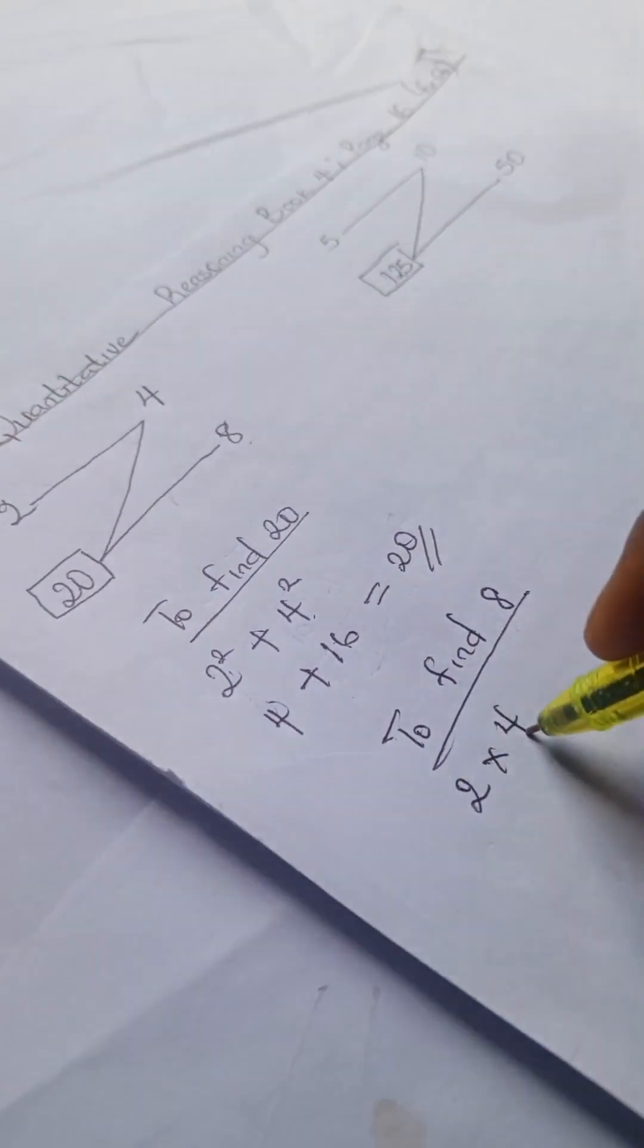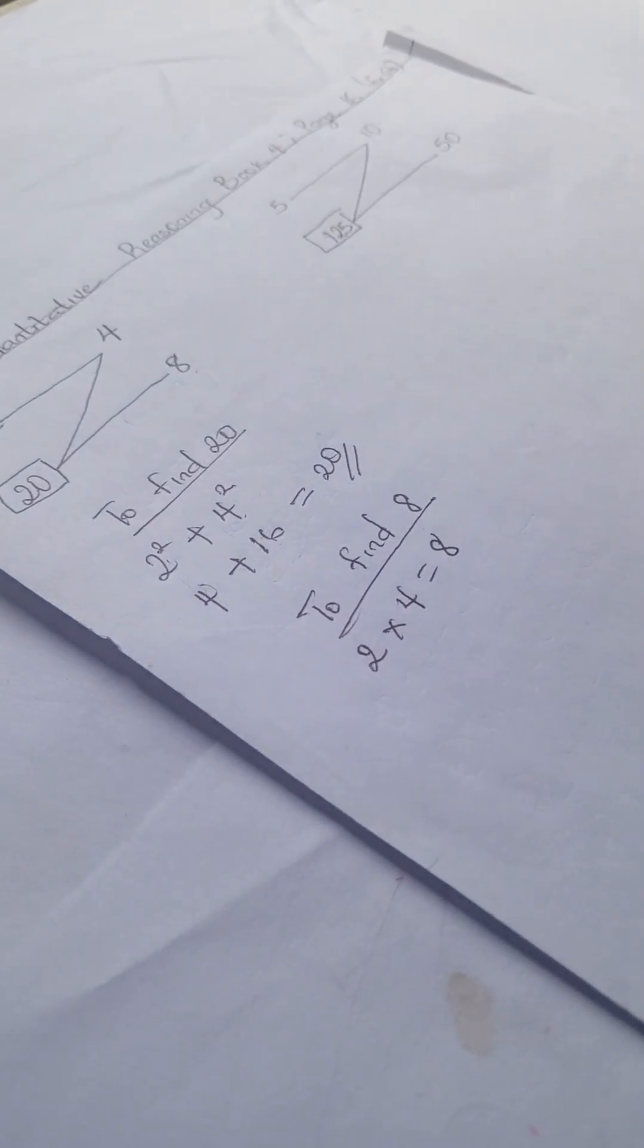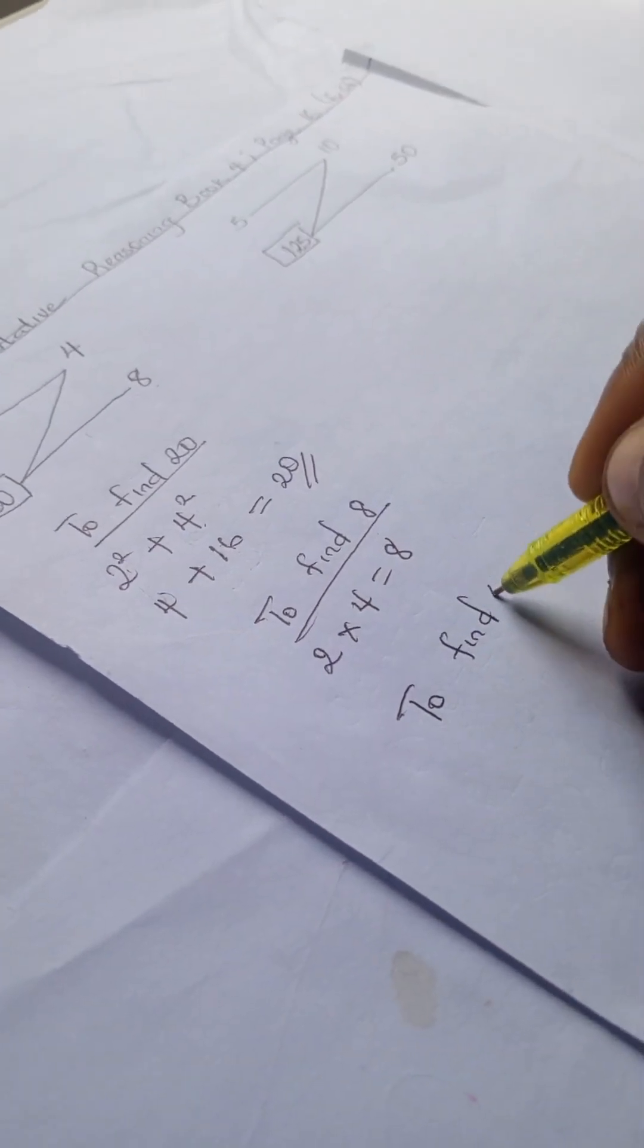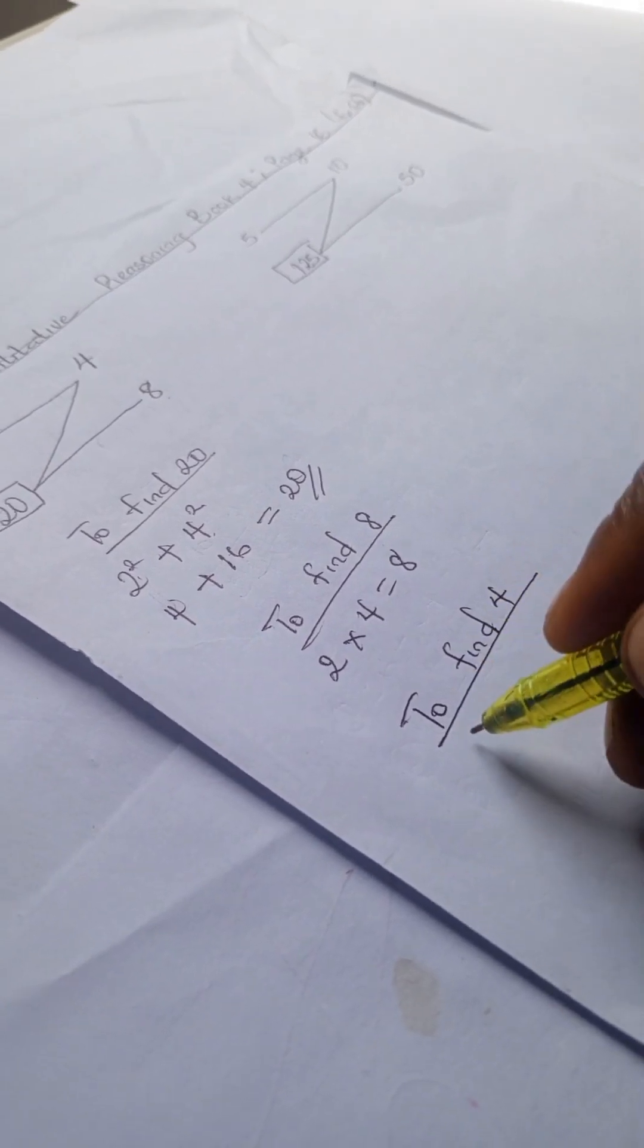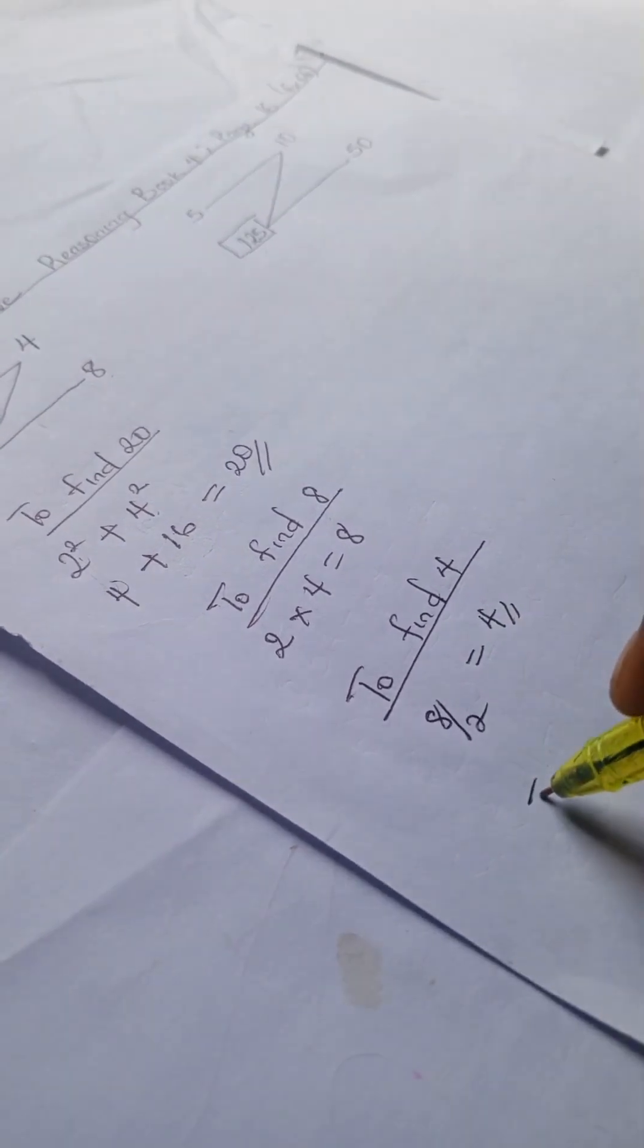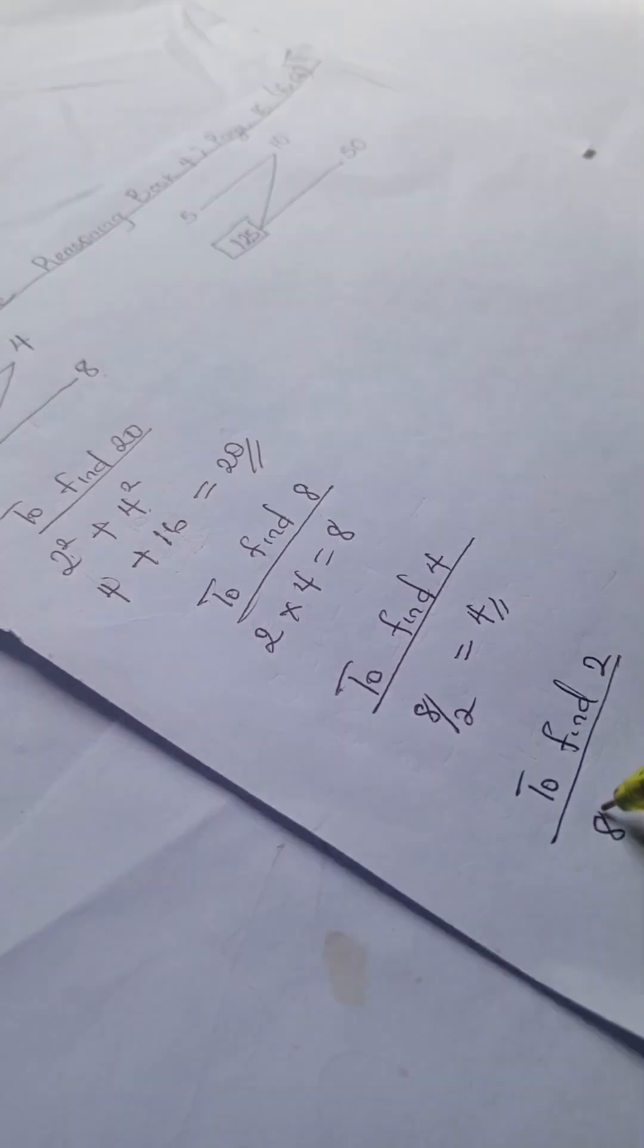To find 4, we have 8 divided by 2 is 4. And to find 2, we have 8 divided by 4 gives us 2.